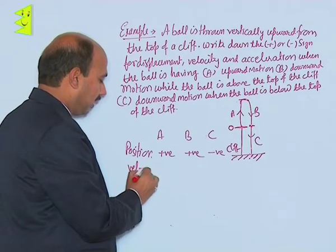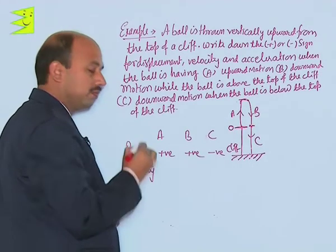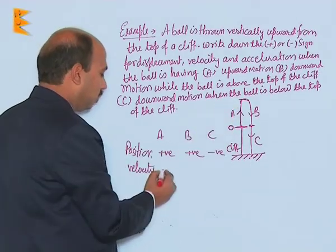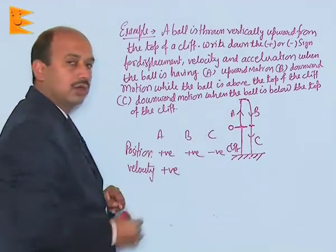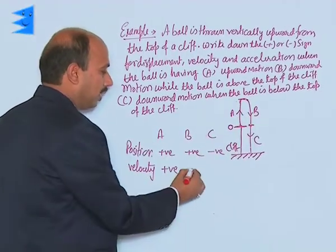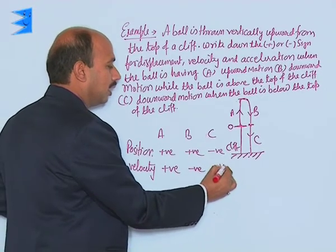Similarly, for velocity we can write: in velocity here, this we take as positive upward direction. Now the velocity's direction is downward, so we can write here negative and here negative.